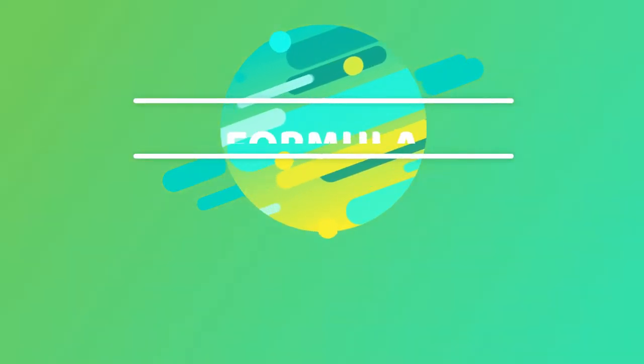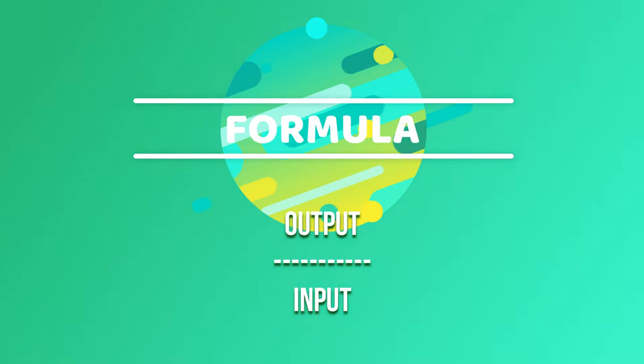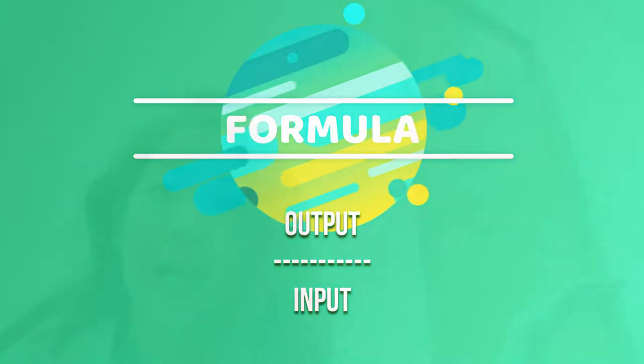We only have to memorize the formula for gain and attenuation, and that is very simple. The formula for gain or attenuation is output divided by input.